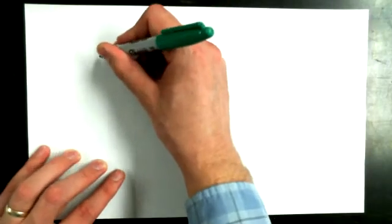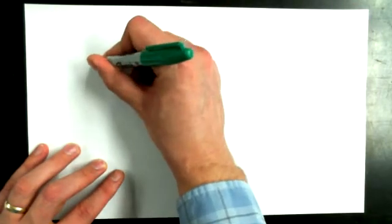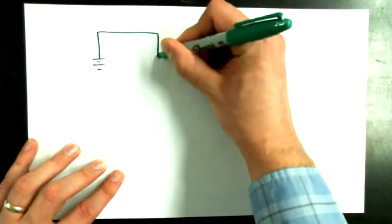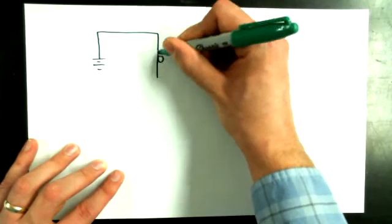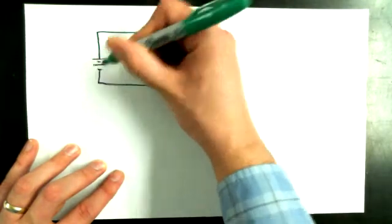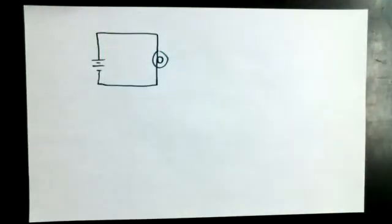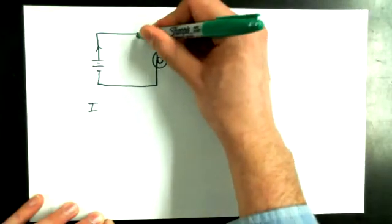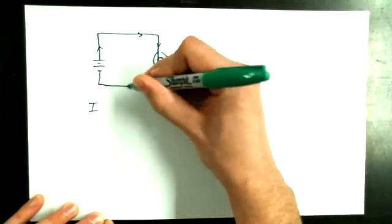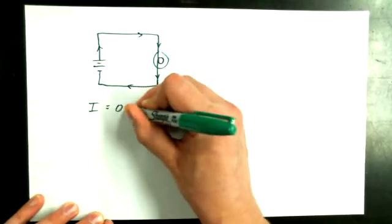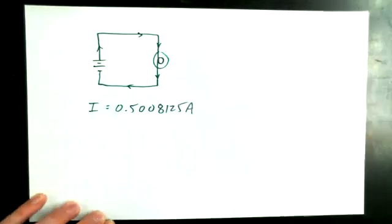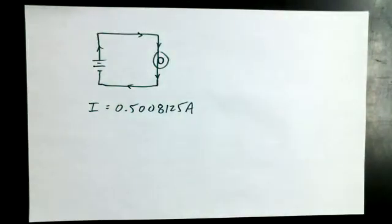Let's say that we have a similar circuit to the one that we talked about before. After doing some previous calculations on this circuit, we were able to determine that this circuit had a current flowing through it equal to 0.5008125 amps.